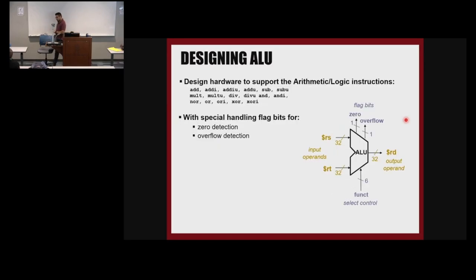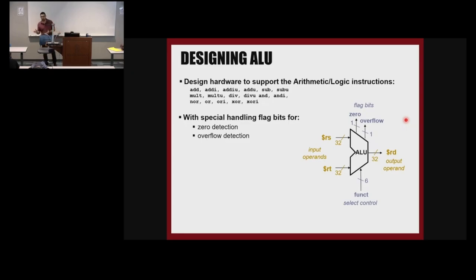The block responsible for implementing arithmetic operations in a computer architecture is called the Arithmetic and Logic Unit (ALU). Its name is clear — it takes care of arithmetic and logic operations. Today we're talking about arithmetic operations: add, add immediate, subtraction, multiplication, and division. For logic instructions, we have AND, OR, and so on.